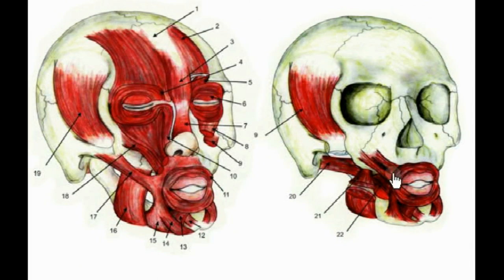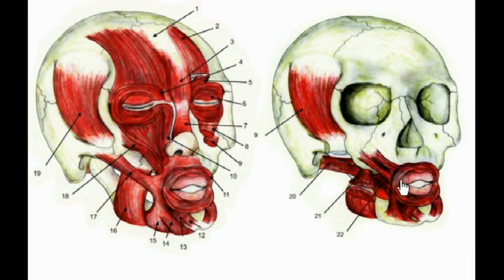Here we're looking at orbicularis oris. It originates in the muscle fibers that surround the opening of the mouth and inserts upon itself, encircling the mouth. Its primary actions are to close the mouth, purse the lips, and protrude the lips.